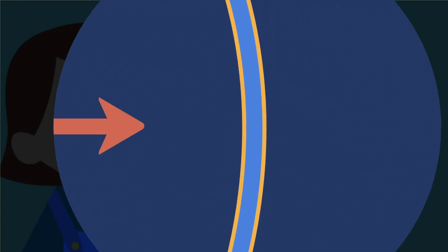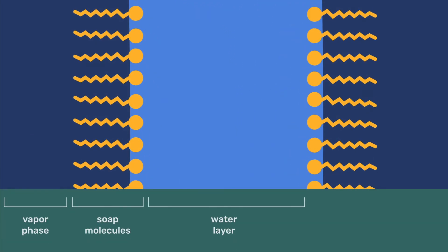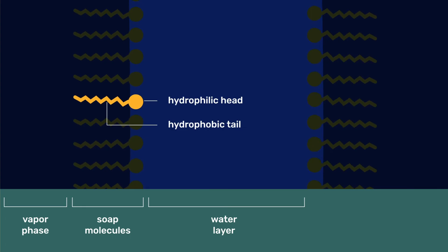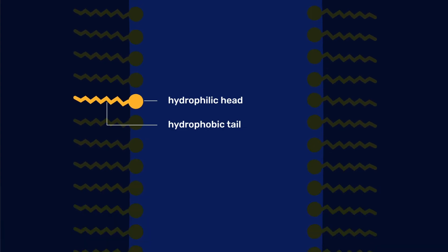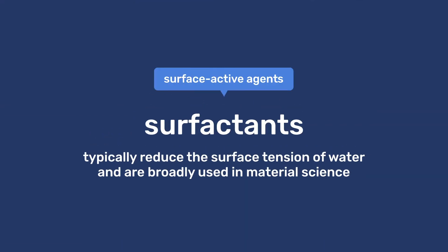In such cases, the interface is stabilised because soap molecules preferably locate themselves at this interface. This behaviour explains their general name of surfactants, which comes from surface active agents.